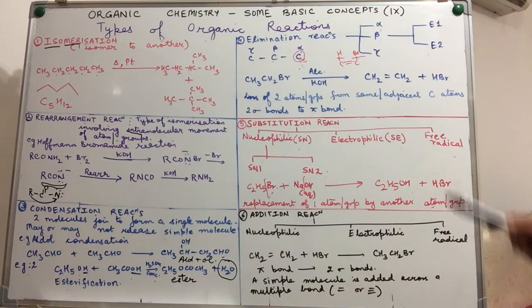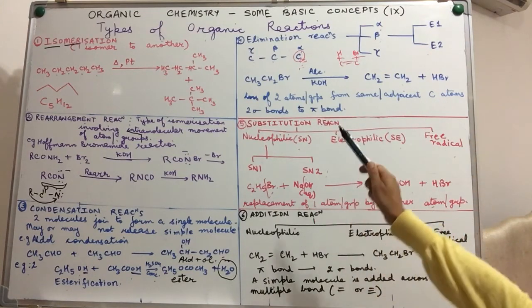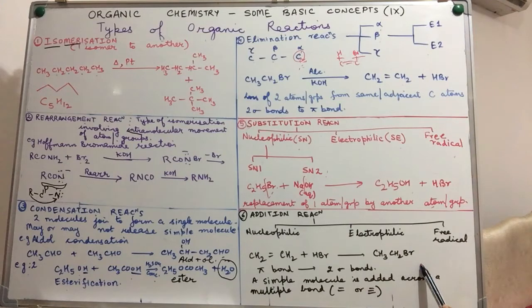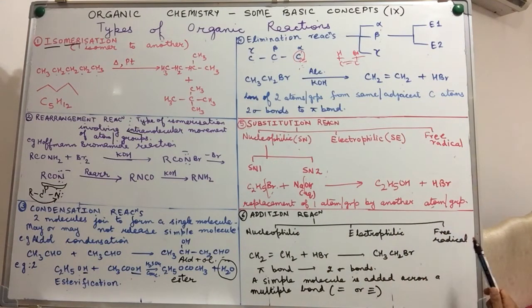Coming to the sixth category of organic reactions, addition, exactly the reverse of elimination. There you had converted a bromoalkane to an alkene. Here you convert an alkene to a bromoalkane. In other words, you will convert a pi bond to two sigma bonds. Addition reactions simply involve the addition of a simple molecule across a multiple bond. Multiple bond could be a double or a triple bond. Again, depending upon what is the attacking reagent, we have nucleophilic addition, electrophilic addition, free radical addition. So you shall be doing the mechanisms, the step-by-step mechanisms of each of these as well.